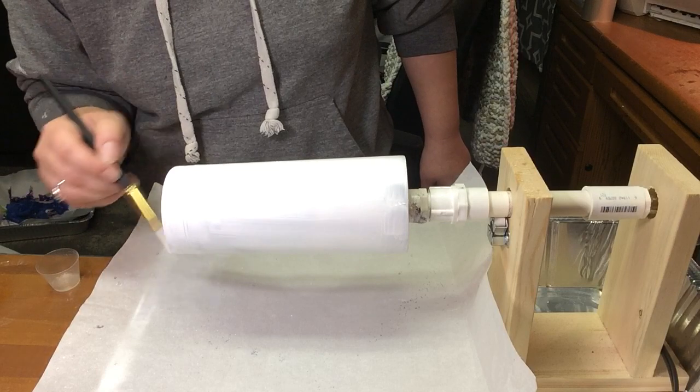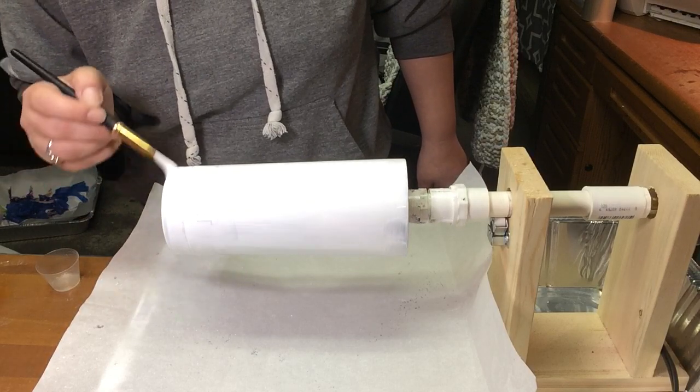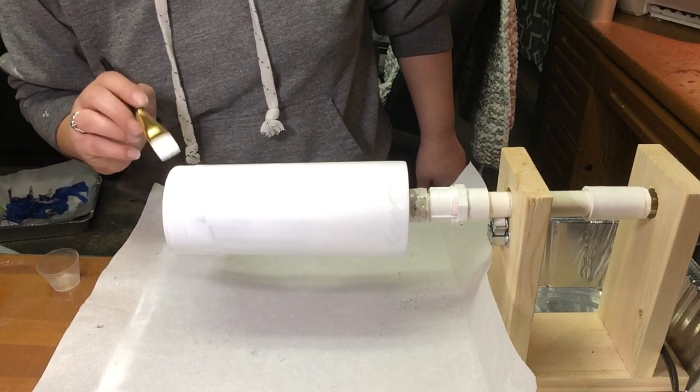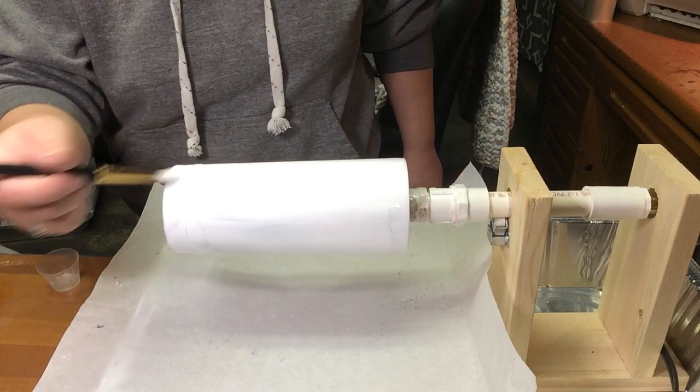When I use the white glitter, I always do two coats of it. It makes it look nicer. You won't see as much through it.